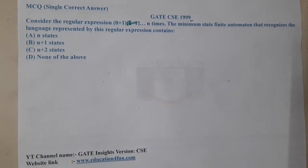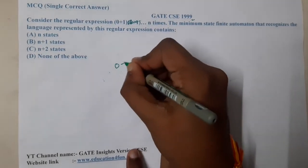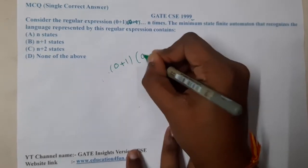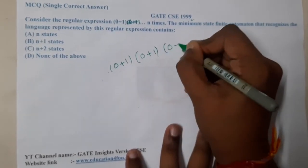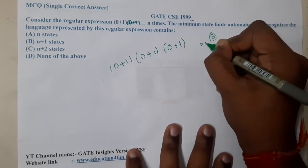To be clear, they want it for a limited length. They are saying (0+1) is done for n times. For our example, let us take n equal to 3.